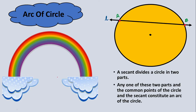Before we get into the properties or the theorems, first let's see what is meant by an arc of a circle. In the introduction session, we have already seen what is a secant, chord, and all the minute components of the circle. Now to study the arc, we need to concentrate on a secant. A secant is a line which touches the circle in two different points. Line L is a secant which is touching the circle in two points A and B.